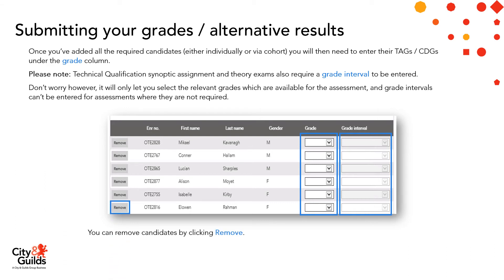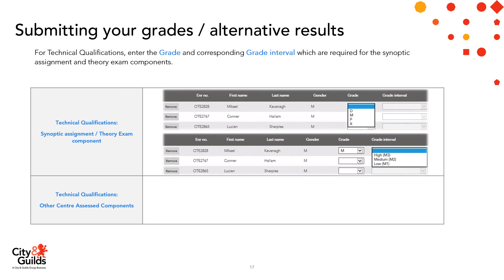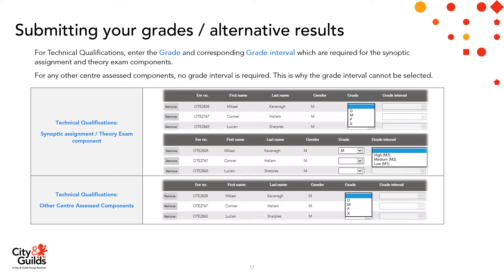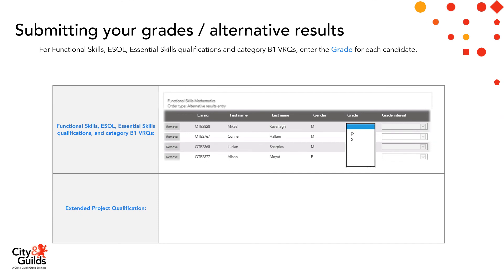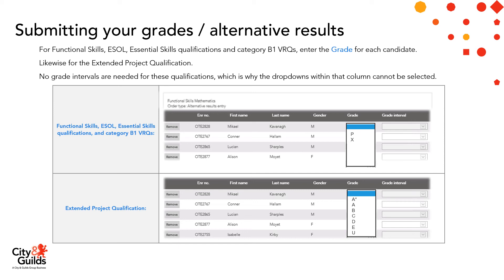If you need to remove candidates you may have entered in error, you can remove them by clicking the remove button. For technical qualifications, you'll need to enter the grade and the corresponding grade interval, which are required for the synoptic assignment and the theory exam components. For other centre-assessed components for technical qualifications, only the grade will be available. For functional skills, ESOL, essential skills qualifications, and the Category B1 VRQs, just enter the grade for each candidate. Likewise for the extended project qualification, which has different grades available in the drop-down — no grade intervals are needed for any of these qualifications.